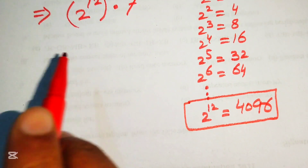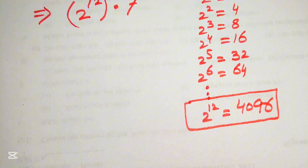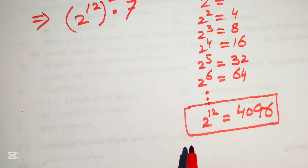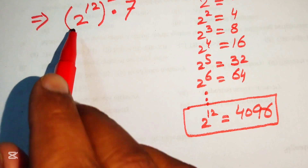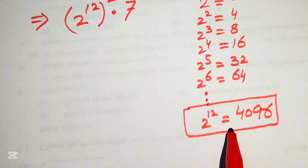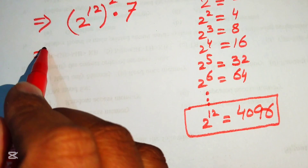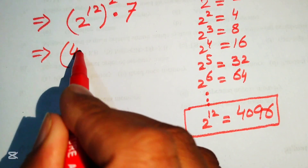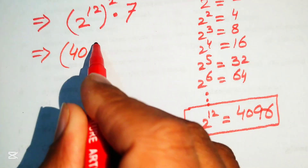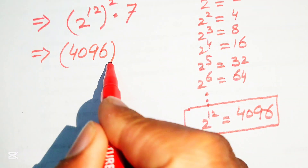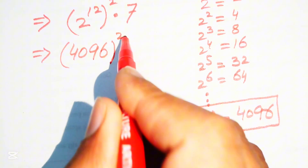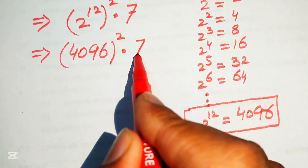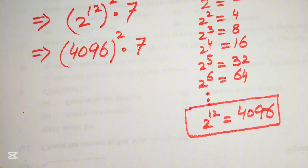Now we replace 2 to the power of 12 with 4096. The expression is written as 4096 whole squared, multiplied by 7.